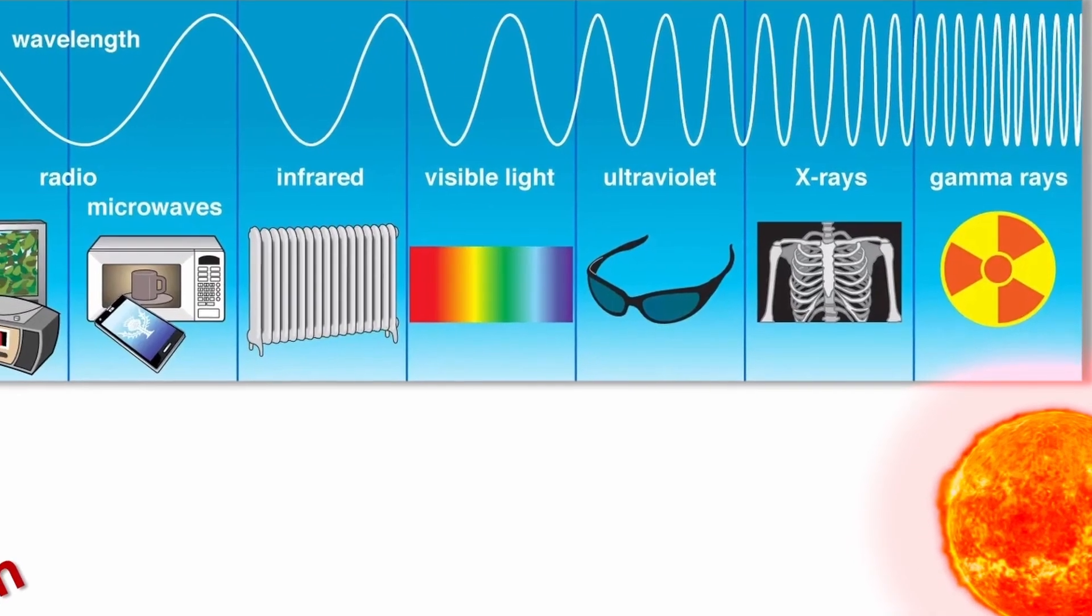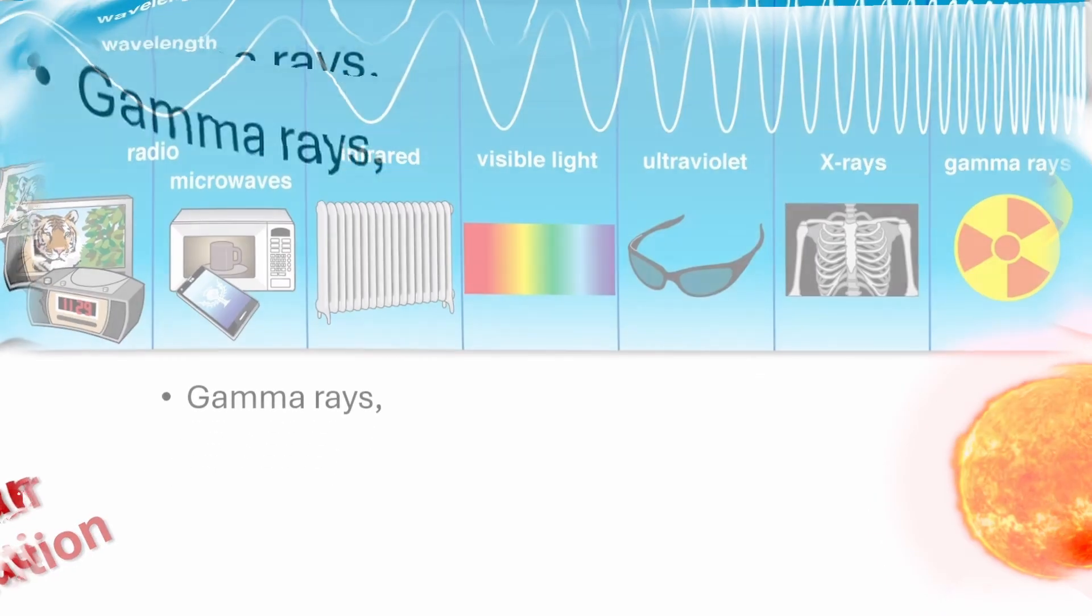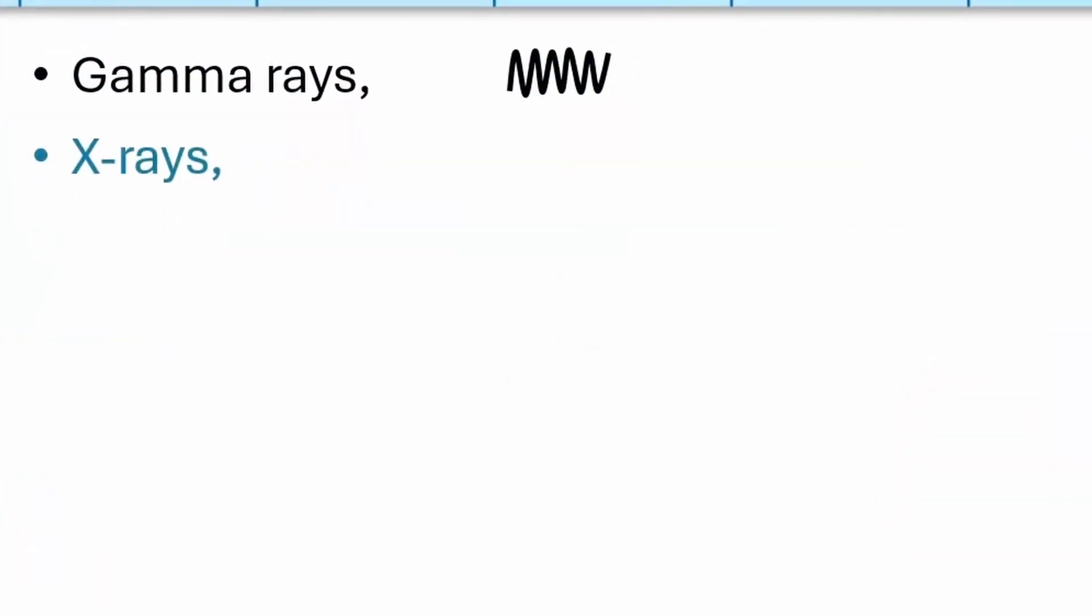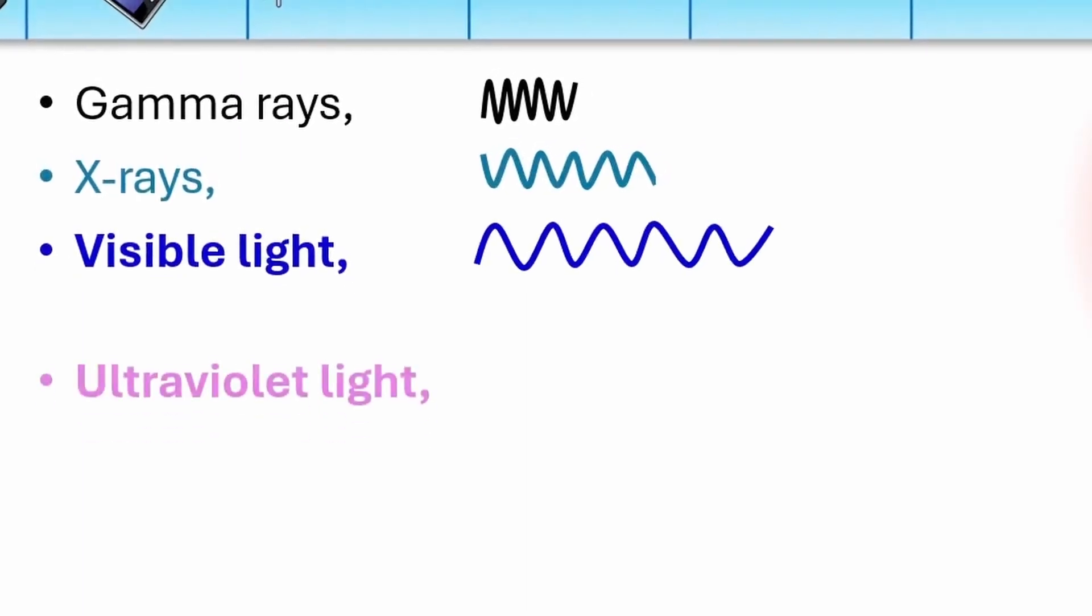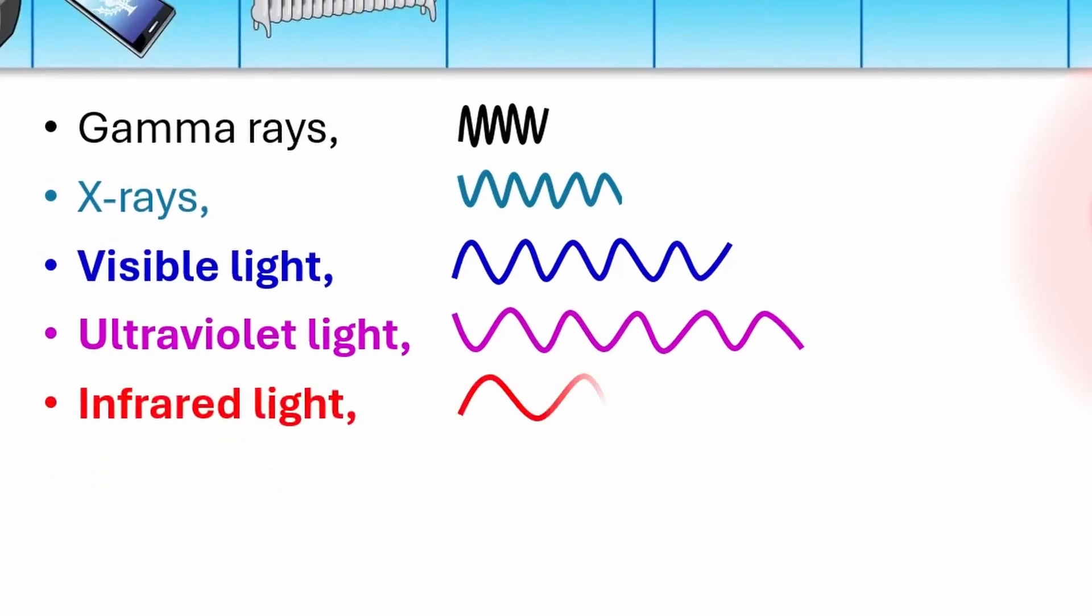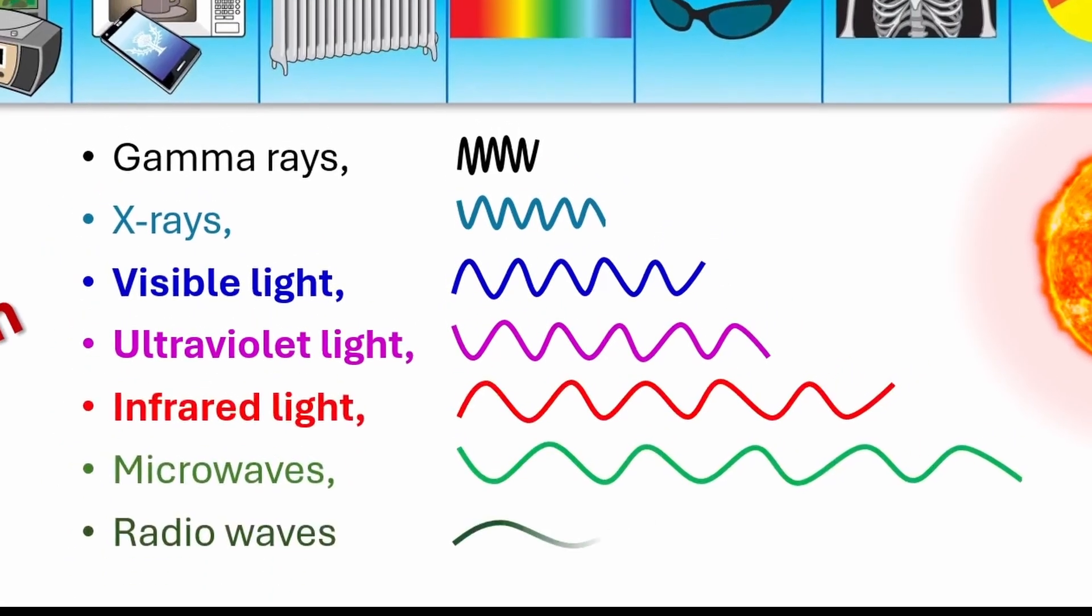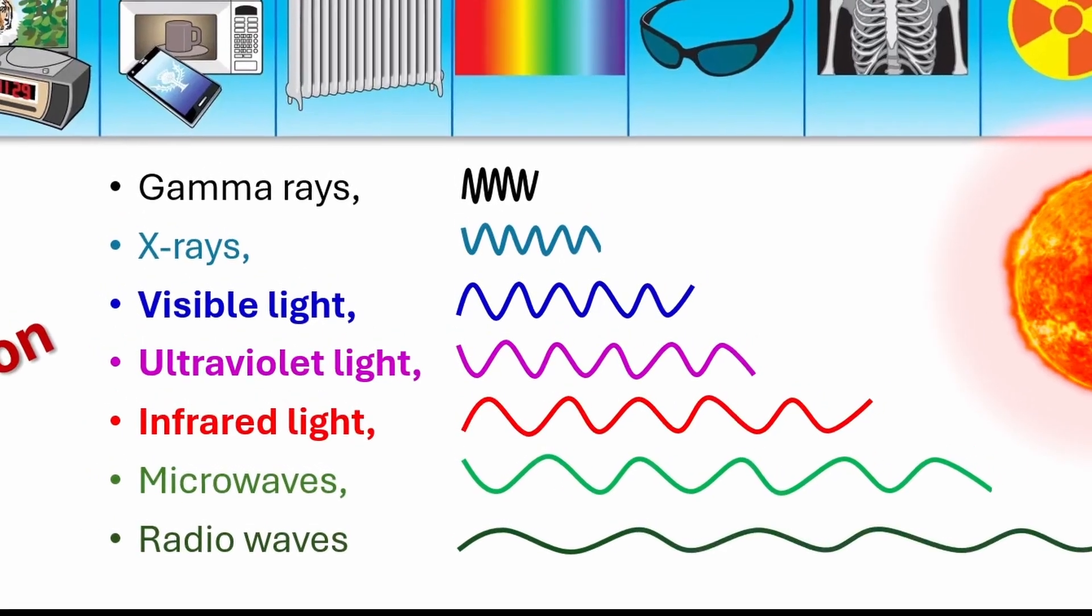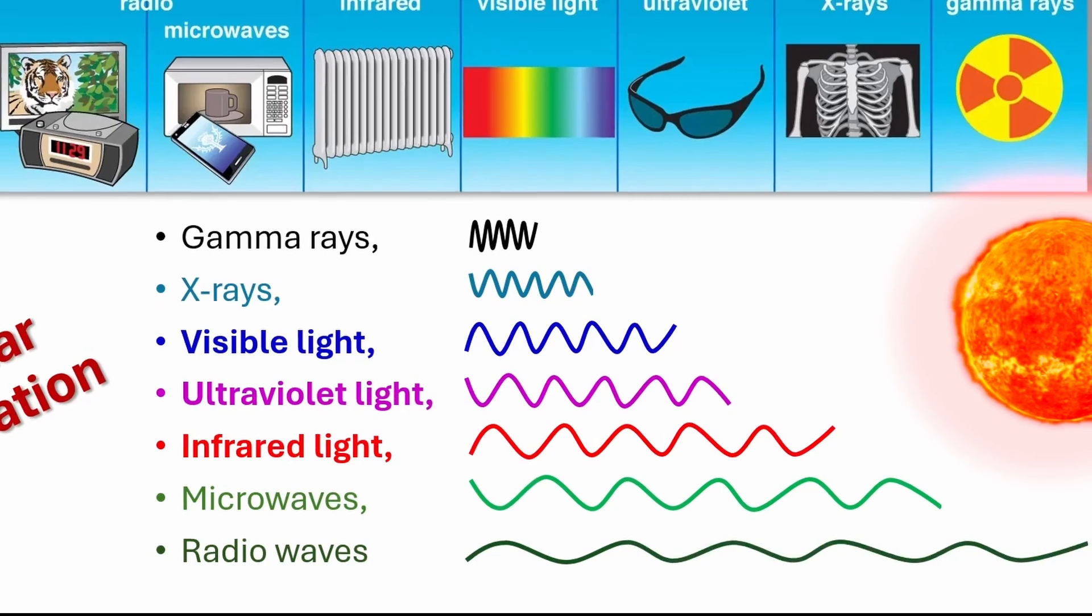Electromagnetic radiation is a form of energy that travels in waves and has both electric and magnetic fields. It consists of a wide range of wavelengths. For example, gamma rays have very short wavelengths and high energy, while radio waves have long wavelengths but low energy.